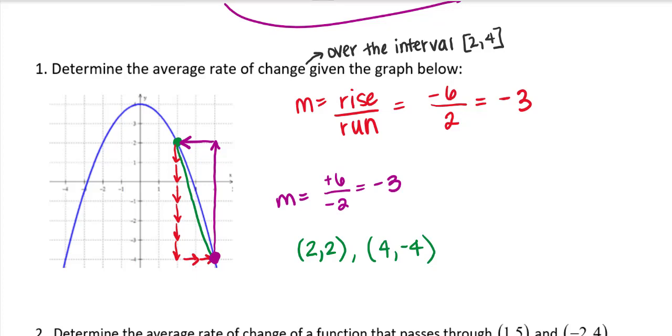It's also important to note that when they give you this interval here, they are telling you the starting input value and ending input value that you are looking between. So I was looking at a starting point of x equals 2, because this is a little x right here, and an ending value of x equals 4. So wherever that crosses my function, those would be where my points lie.